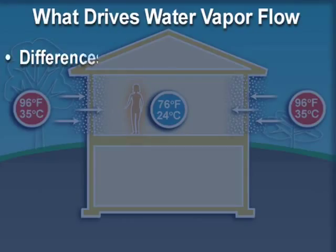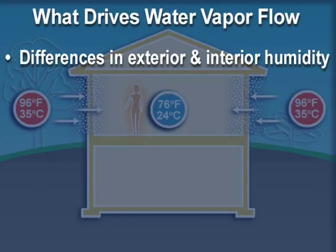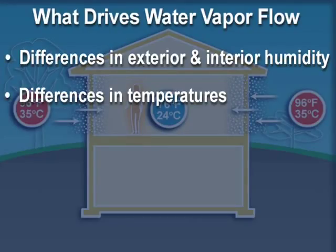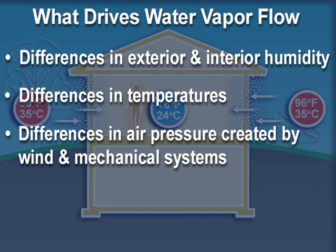We've discussed the importance of preventing liquid water from entering our building from the outside. Let's not underestimate the importance of managing water vapor flow, both from the outside in and the inside out. The amount and direction of flow will be driven by differences in exterior and interior humidity, differences in temperature, and differences in air pressure created by wind and mechanical systems, such as forced air furnaces and large exhaust fans.